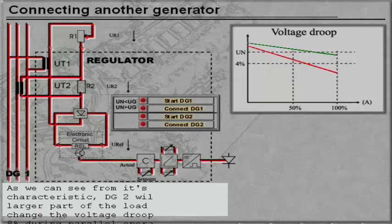As we can see from its characteristic, DG2 would take a larger part of the load if we change the voltage droop on DG1 to 8% during parallel operation.